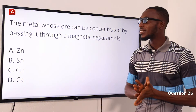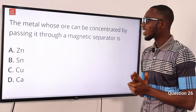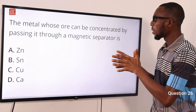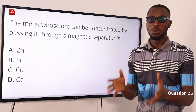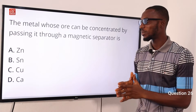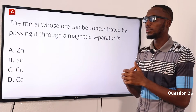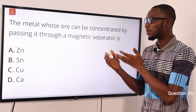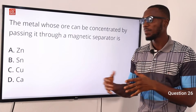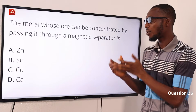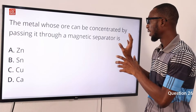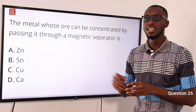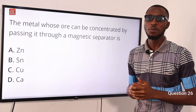Question 26. The metal ore that can be concentrated by passing it through a magnetic separator is what? For zinc ore you talk about froth flotation. For tin we talk about washing away. For copper, that is where we use a magnetic separator. So the correct option is option C — Cu for copper.